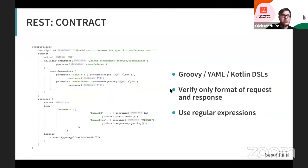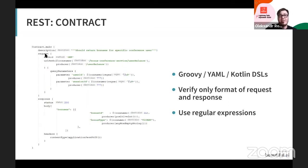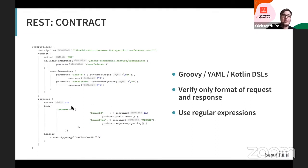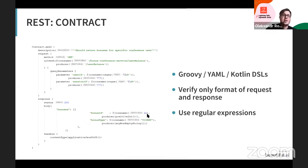Here is an example of how a contract looks. We define the request section — the user service will call the bonus service's user balance endpoint using the GET method with some query parameters, specifically user ID and session ID. In the response section, the user service expects a status code of 200 and an array of bonuses for the given user.